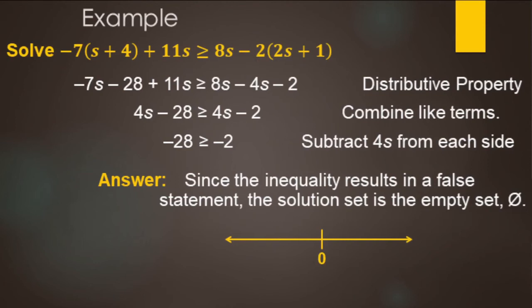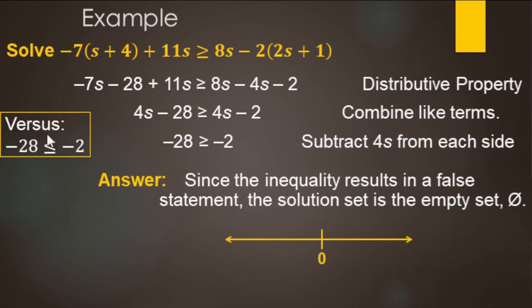Just because the numbers are different doesn't automatically mean no solutions — you have to check whether it makes a true or false statement. For example, if we ended up with negative 28 less than or equal to negative two, that's actually true, so that would give infinite solutions. The rule is: if you end up with a false statement, there are no solutions; if it's always true, there are infinitely many solutions.